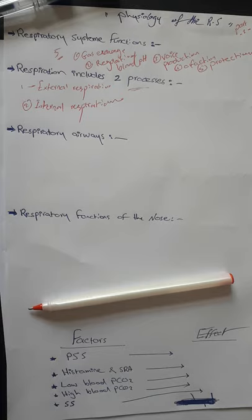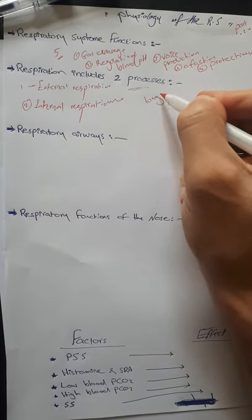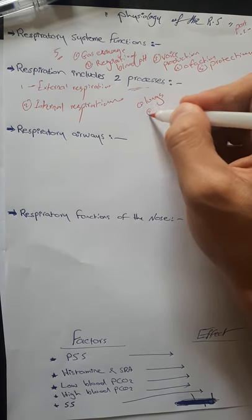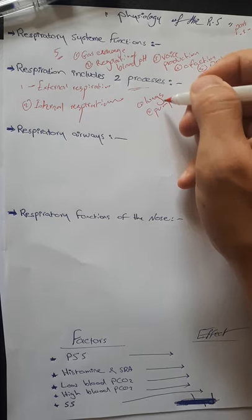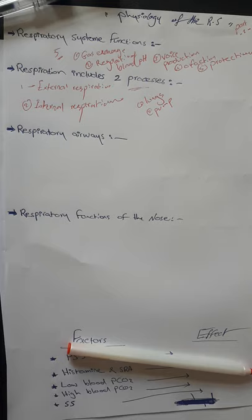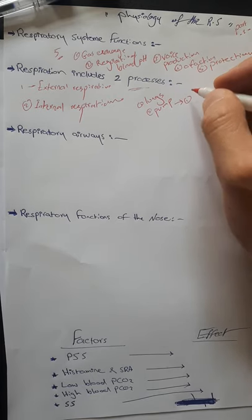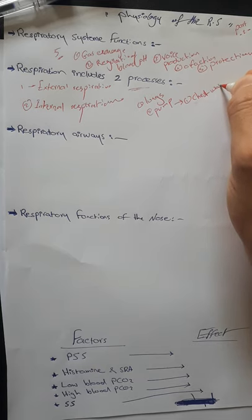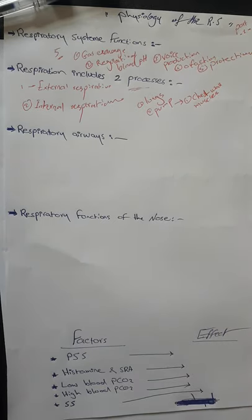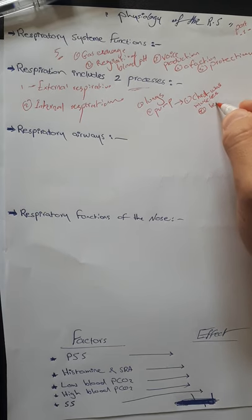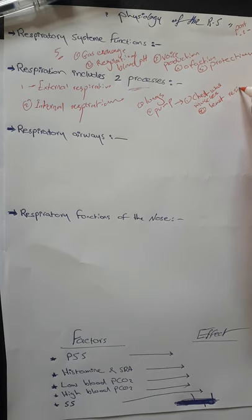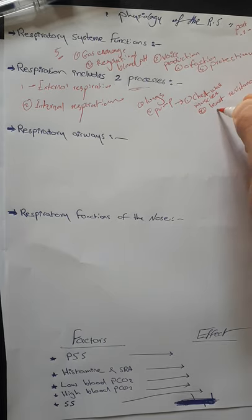The respiratory system is made up of a gas-exchanging organ called the lungs, and a pump that ventilates the lungs. This pump is made up of: first, chest wall muscles, which increase and decrease the size of the thoracic cavity; and second, least resistance to airflow.